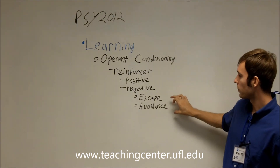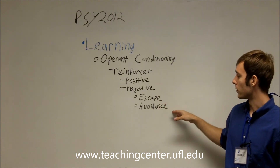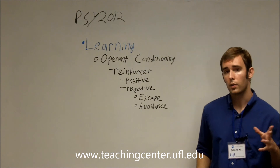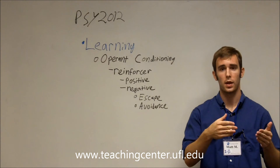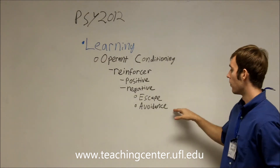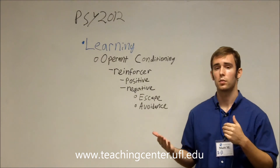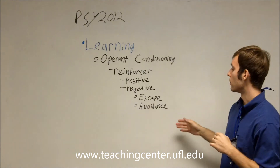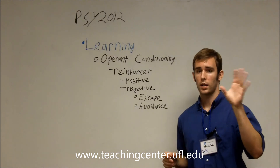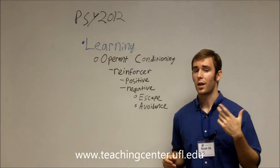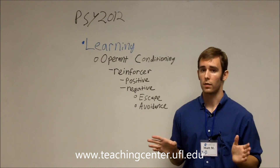There are two types of negative conditioning: escape and avoidance. The example we just talked about was escape — while something is happening, I engage in a certain behavior and it stops. Avoidance is engaging in a certain behavior to avoid the stimulus being presented at all. For example, I see rain clouds in the morning and think it might rain, so I bring an umbrella to avoid getting wet in the first place.